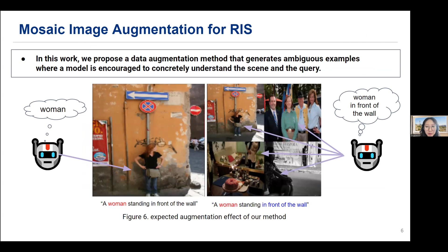The method is super simple. Our method augments each image by combining it with three other images to create a mosaic. The three images are retrieved from the image pool based on their similarities to the original image. As a result, we can build an image where each mosaic cell works as a negative image. For example, with the query 'a woman standing in front of the wall,' in the left image understanding 'a woman' is enough to find the target, but in the right, the model now needs to understand what 'woman in front of the wall' means. We expect the augmentation method to help the model focus on the subtle differences between similar entities in the image.